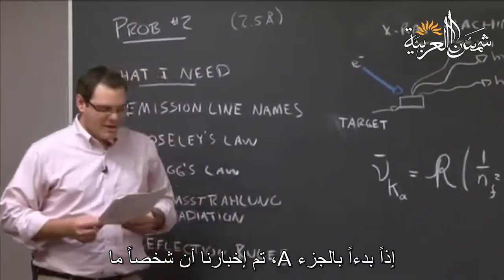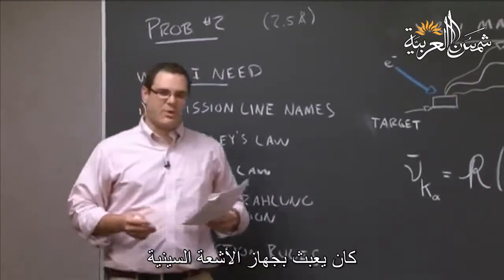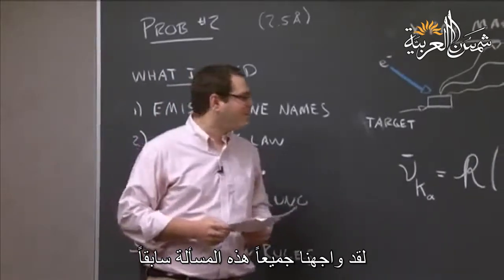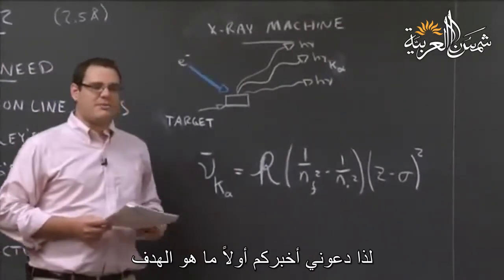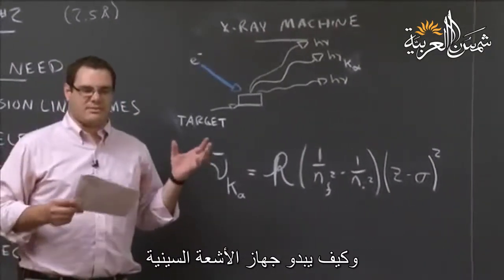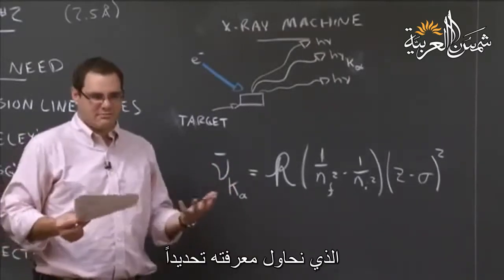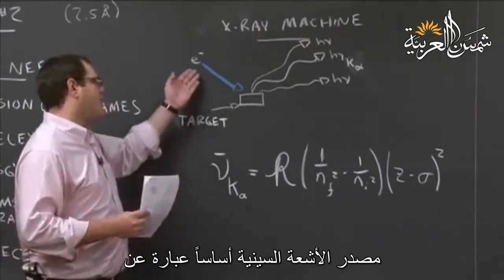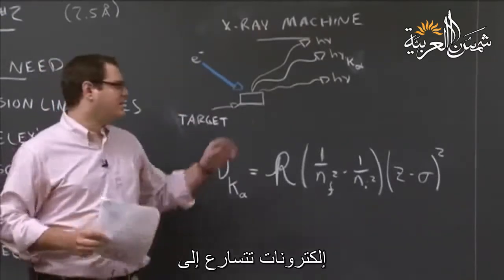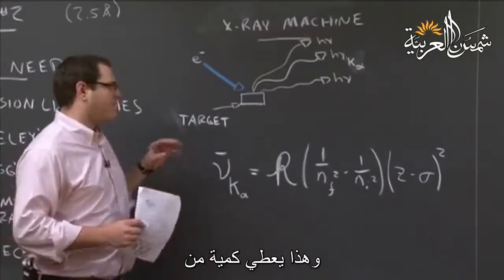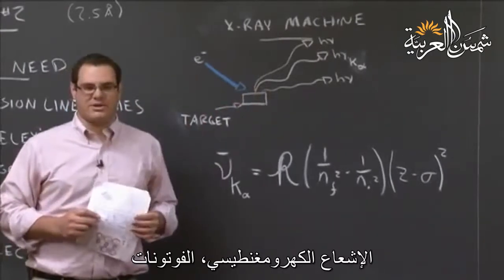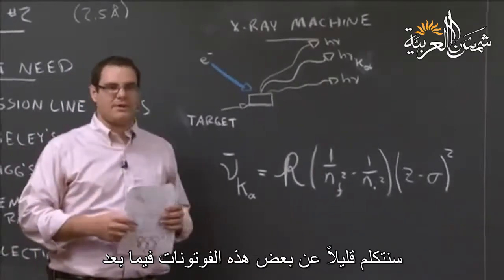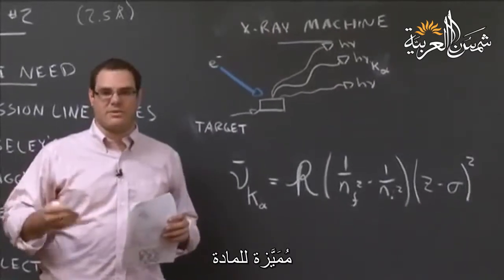Getting onto part A, we are told that somebody has been horsing around with our x-ray machine and changed the target. An x-ray machine basically involves electrons being accelerated into a target material — a metal — and then that gives off a whole bunch of electromagnetic radiation, so photons.